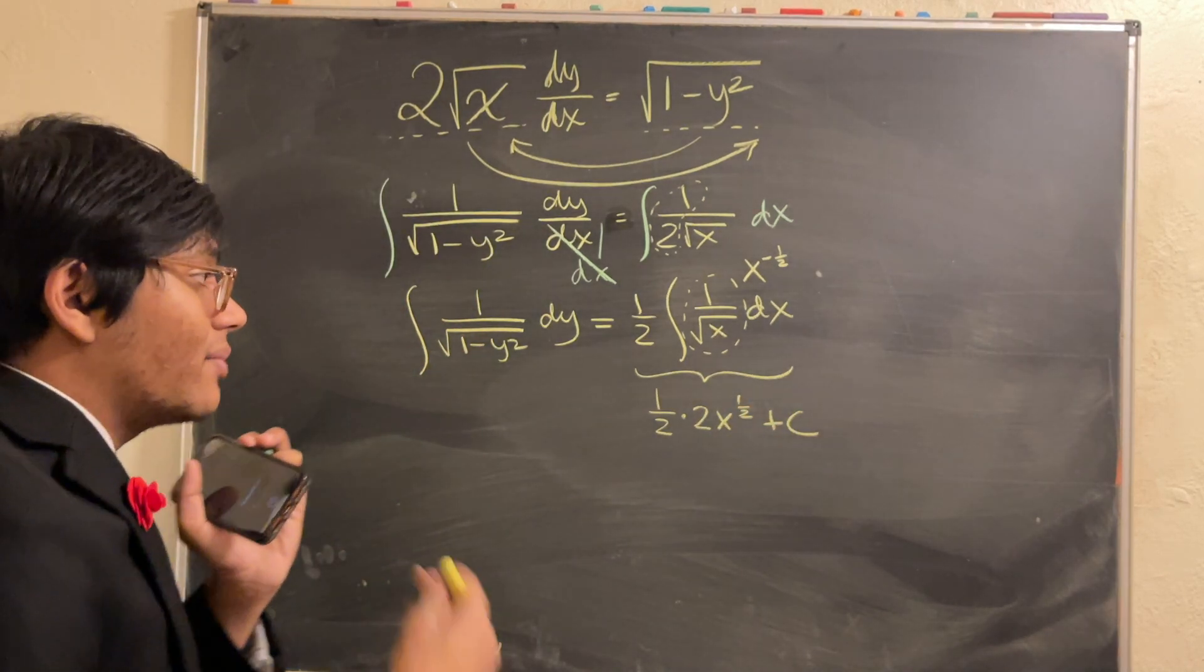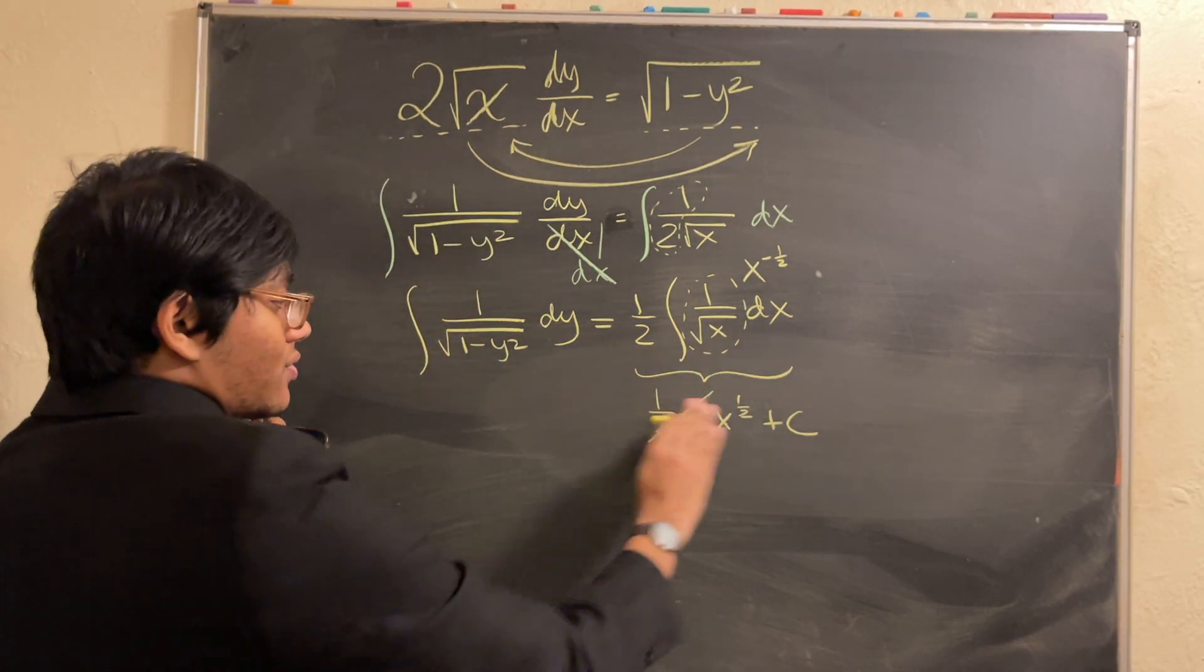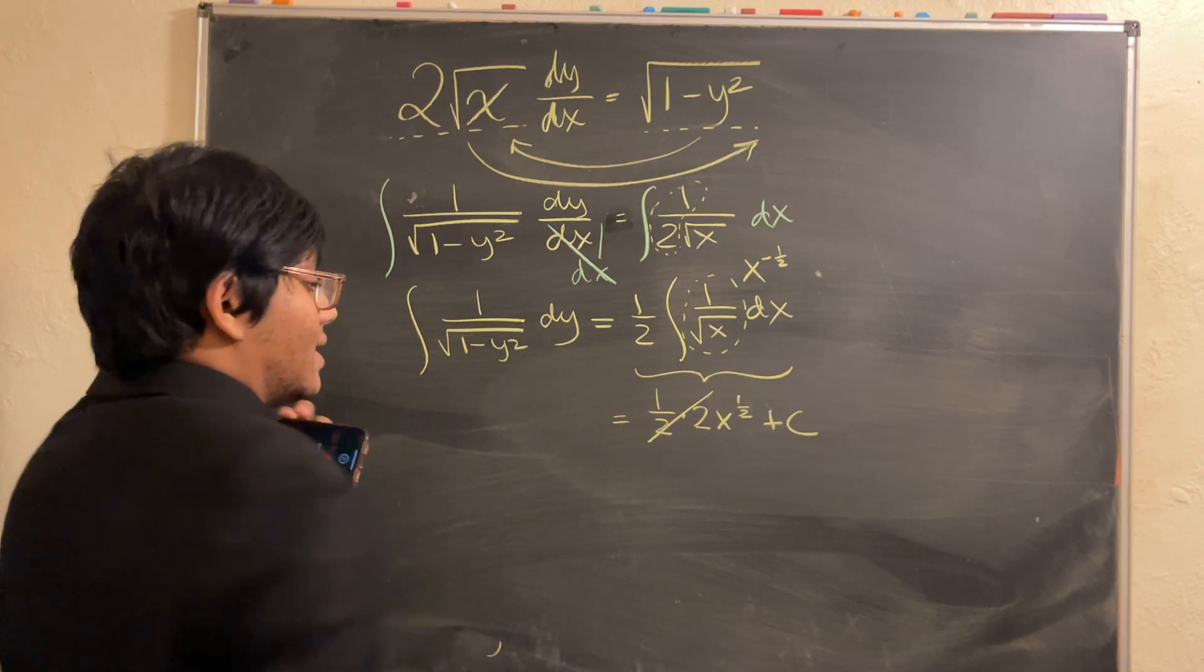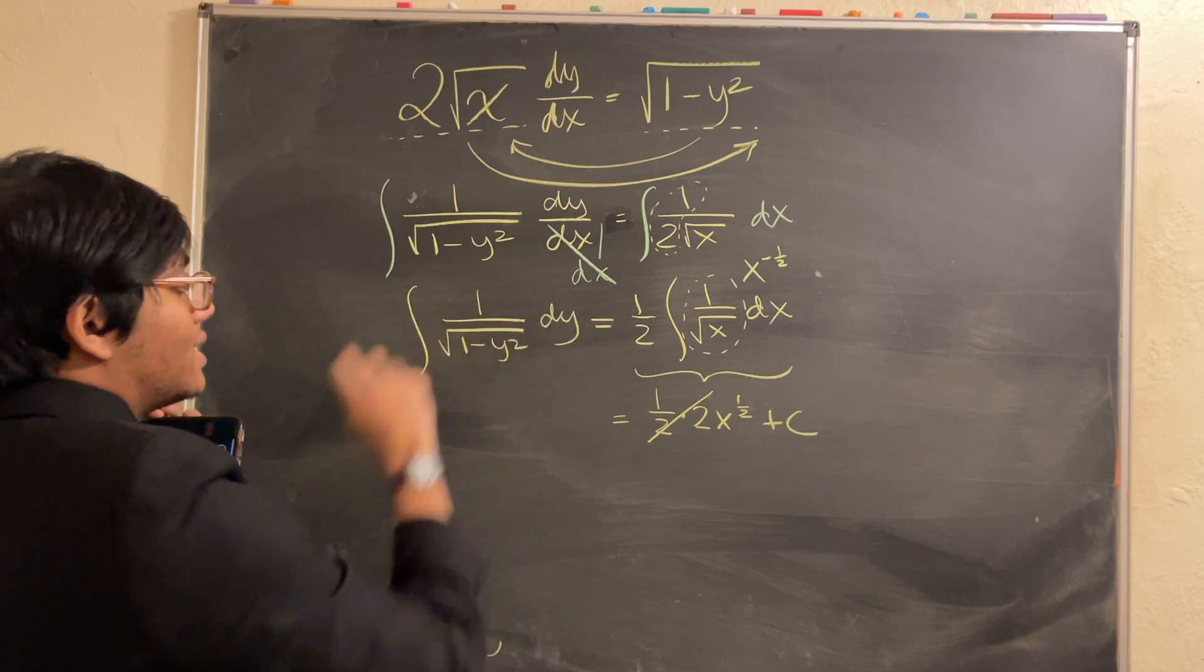And don't forget the plus c, because there's a whole family of functions which satisfy this integral. And so, half and 2 cancel out, so we're left with x to the half plus c. And I'm going to write that a bit nicer in the next line. Now, how are we going to deal with this?